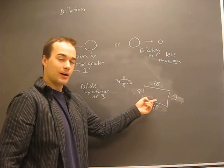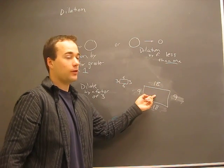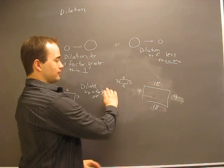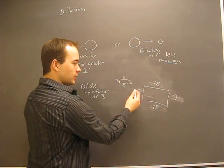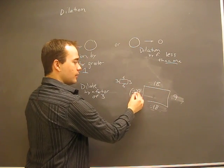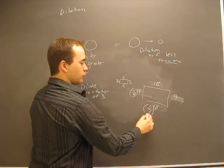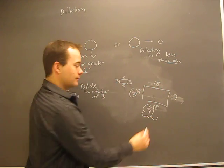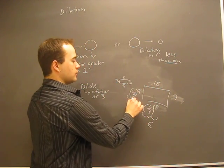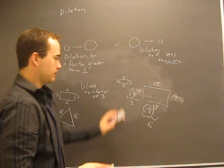Likewise, to go backwards, you would dilate by a factor of one-third, because if we were to multiply this by one-third, we would get what we started with. Six, three.